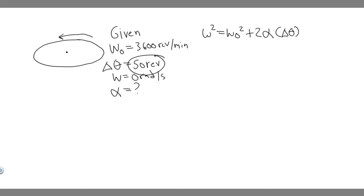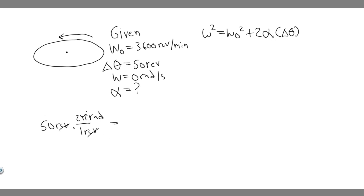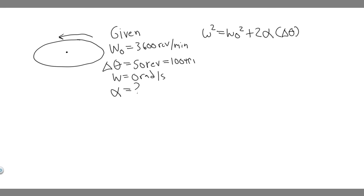Let's do theta first because it's easier. We have 50 revolutions, and we know one revolution equals 2 pi radians — that's a conversion you have to know. So multiplying 50 revolutions by 2 pi radians per revolution, the revolutions cancel, and 50 times 2 pi gives us 100 pi radians. So theta equals 100 pi radians.